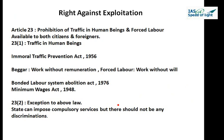We have now finished two rights: the right to equality from Articles 14 to 18, and the right to freedom from Articles 19 to 22. Now we move to the third fundamental right — the right against exploitation. Article 23 deals with the prohibition of traffic in human beings and forced labor. Part 1 says traffic in human beings and begar and other forms of forced labor are prohibited, and any contravention of this provision shall be an offense punishable in accordance with law.